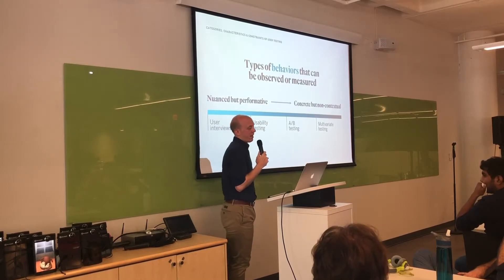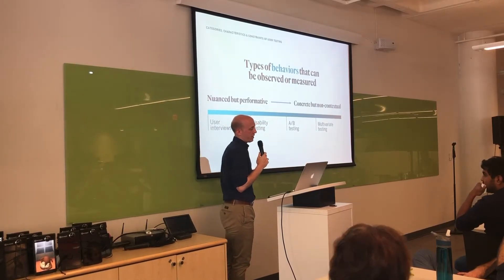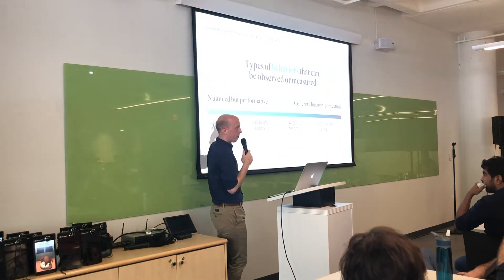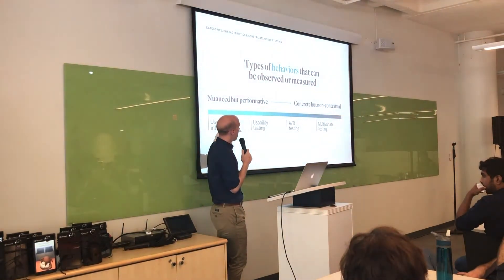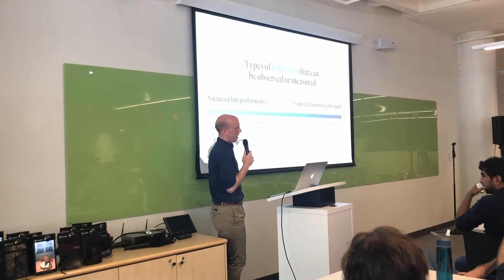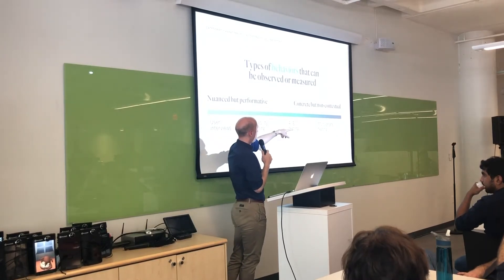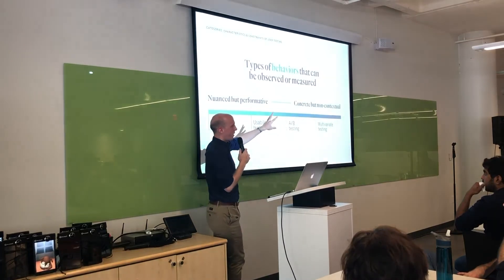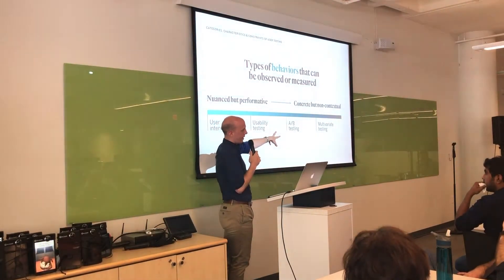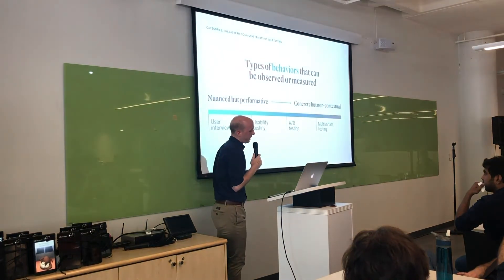Next is the type of behaviors that can be observed or measured. On the qualitative side you'll get more nuanced information, but it can tend to be performative because you're seeing that person in a situation that's not native to them. On the quantitative side it's concrete but non-contextual - we have actual data about what they did, but we don't have any context around why they might have done it.